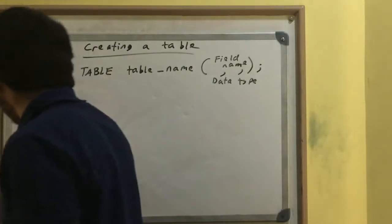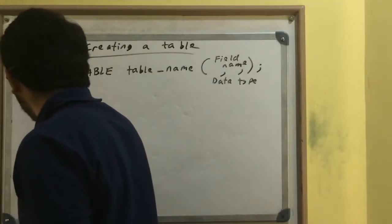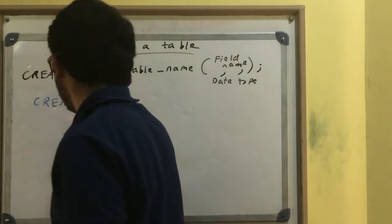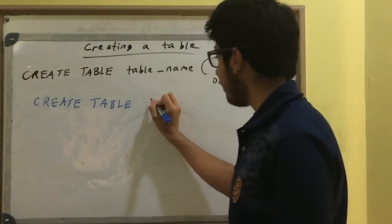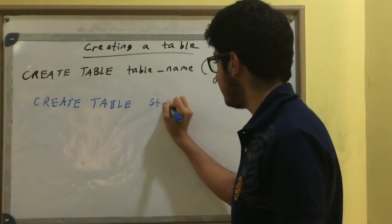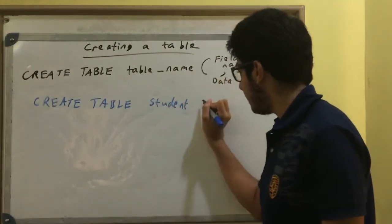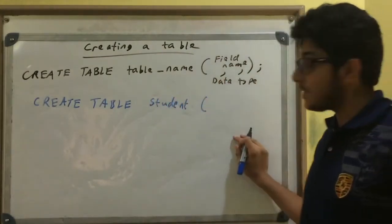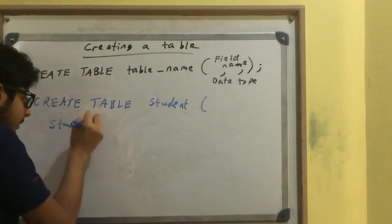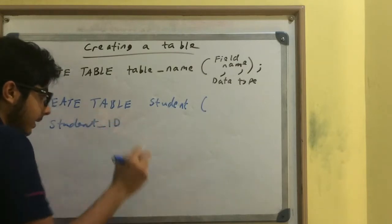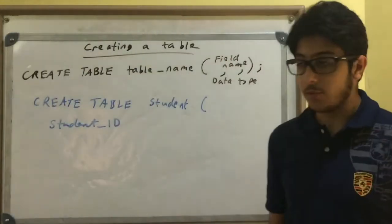So say if I were to create a table of students and who teaches them: CREATE TABLE, let's just call it student, and then open brackets. The first field name, I'm going to say student_ID, and I want this to be a primary key.